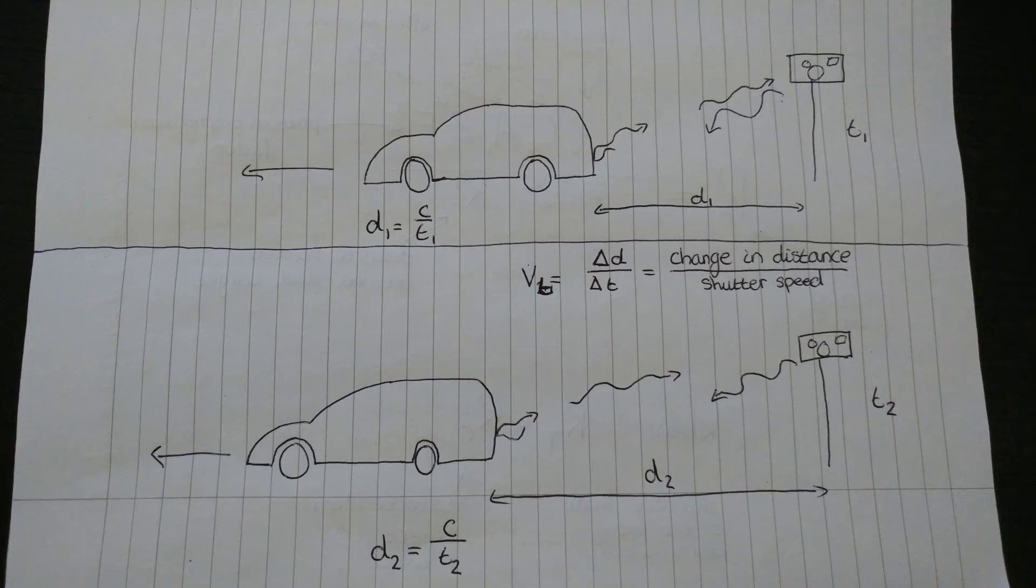So how does the speed camera take a measurement of the speed of a vehicle? The camera fires at least two pulses of radio wave radiation at the speed of light at the target vehicle. It measures the time it takes for that same pulse to return back to the camera, and then to measure the speed, it's simply the change in position of the car over the entire time interval, which is given by the shutter speed of the GATSO camera.